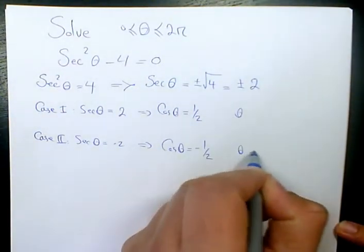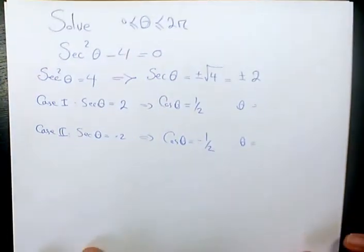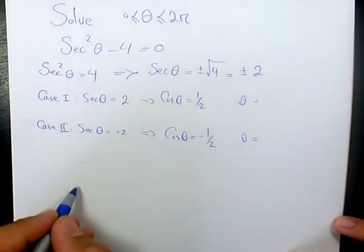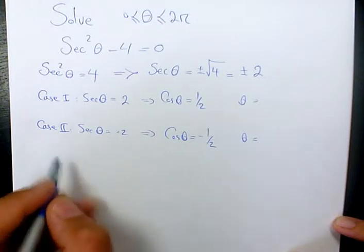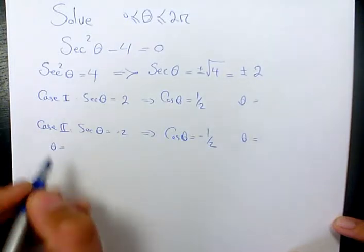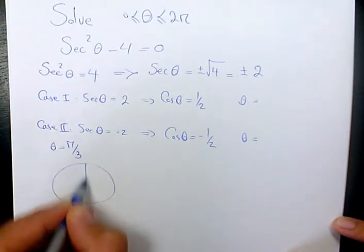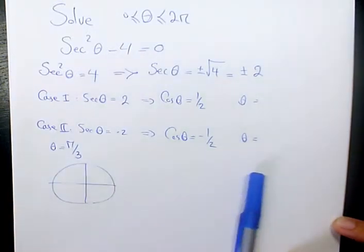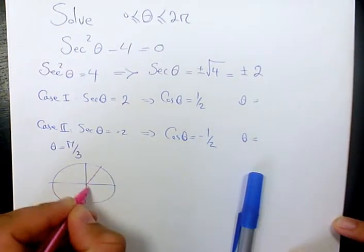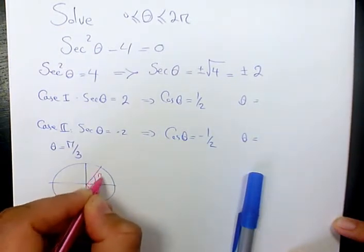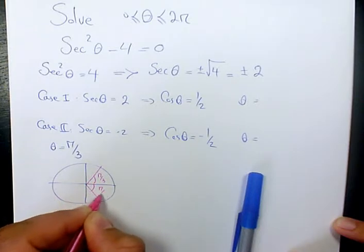I'm guessing for each case, I have two answers. So cosine theta is 1 over 2. Theta in quadrant 1 is going to be pi over 3. And we know cosine is positive in quadrant 1 and quadrant 4.